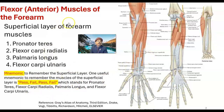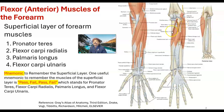All of the superficial layer muscles are innervated by the median nerve, with the exception of flexor carpi ulnaris, which is innervated by the ulnar nerve. We also see the relationship of blood vessels: the brachial artery divides into the ulnar artery and the radial artery. The median nerve passes between the two heads of origin of the pronator teres.